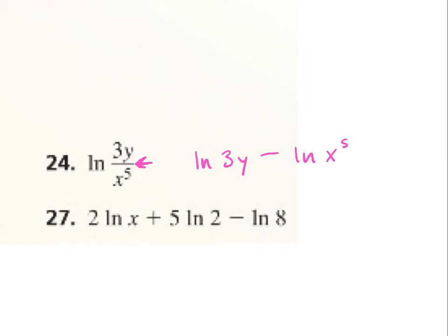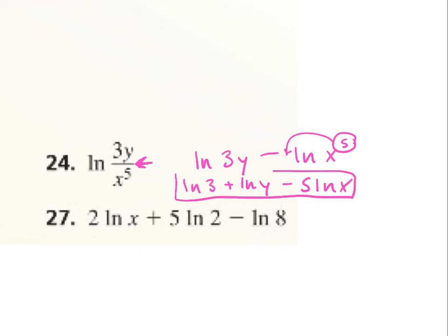What else are we doing here? Why don't we put the y at the end? Well, we still need to break this up because we're multiplying in here. So if we're multiplying, how do we expand it more? Add them. So ln of 3 plus ln of y minus... Can we do anything with this last term, x to the 5th power? What do we do with exponents? Move it to the front. So this would be 5 ln x. So every time you break something apart, it gets an ln.